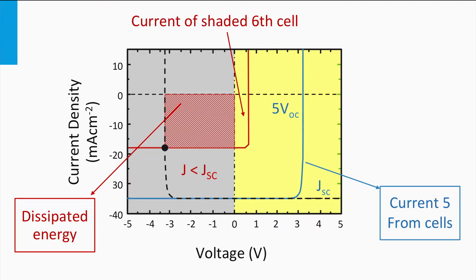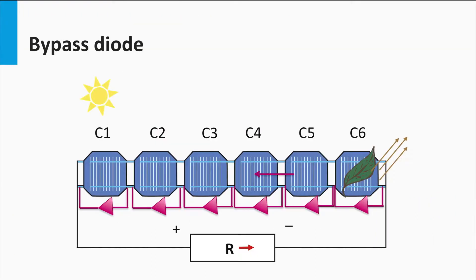The temperature can increase to such a critical level that the encapsulation material cracks or other materials wear out. High temperature conditions also lead to a decrease of PV output. This can be prevented by including bypass diodes in the module. A diode blocks current in one direction when under negative voltage but conducts current when under positive voltage. If no cell is shaded, no current flows through the bypass diodes. When one cell is shaded, the bypass diode starts to pass current, allowing the current to go around the shaded cell so the module can still produce the current equal to that of a non-shaded single solar cell.